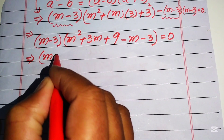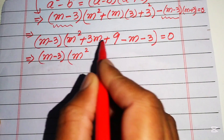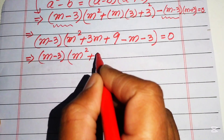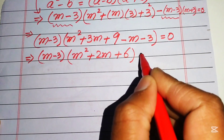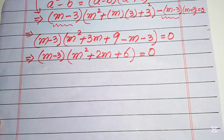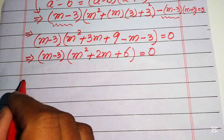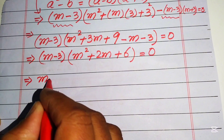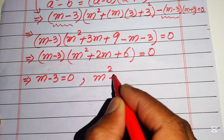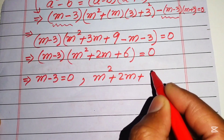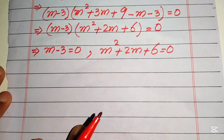Further simplifying, we write (m minus 3) times (m squared plus 2m plus 6) equals 0. Here 3m minus m equals 2m and 9 minus 3 equals 6. We divide this into two cases: Case 1: m minus 3 equals 0, and Case 2: m squared plus 2m plus 6 equals 0.